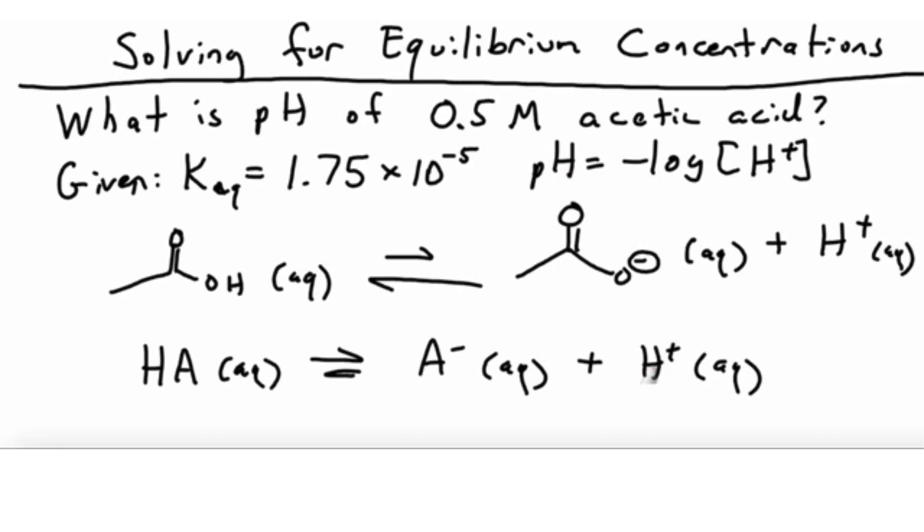Before continuing, note this abbreviated format. In acid-base problems, it's tedious to write full names or structures, so we abbreviate. Since acetic acid has one acidic hydrogen, we write it as HA. When it loses H+, what remains is the anion A-. This equilibrium constant for acid dissociation is given a special name: Ka.